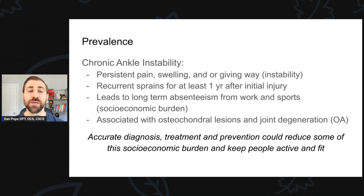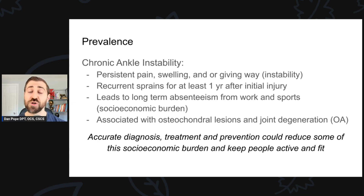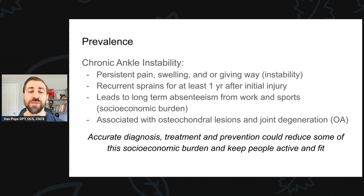Chronic ankle instability is defined as persistent pain, swelling, and/or giving way — some sort of instability and/or recurrent sprains for at least one year after initial injury. It leads to long-term absenteeism from work and sports and has a large socioeconomic burden. It's also associated with osteochondral lesions and joint degeneration. With a 50-50 shot of getting chronic ankle instability after a sprain, and the potential for more osteoarthritis and disability over time, an accurate diagnosis, treatment, and prevention could reduce this burden and keep people fit and active.